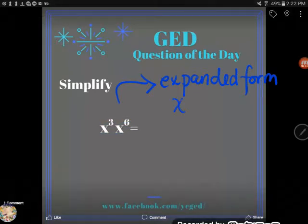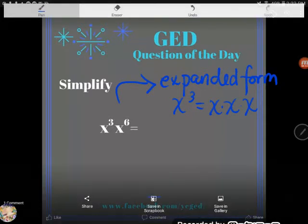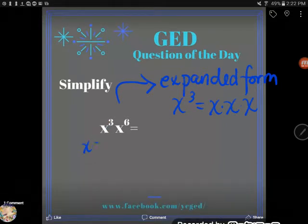So for example, x to the third means, by definition, x multiplying by itself three times, or x times x times x. I hope that makes sense. So one way I could rewrite x to the third power is x times x times x. Beautiful.